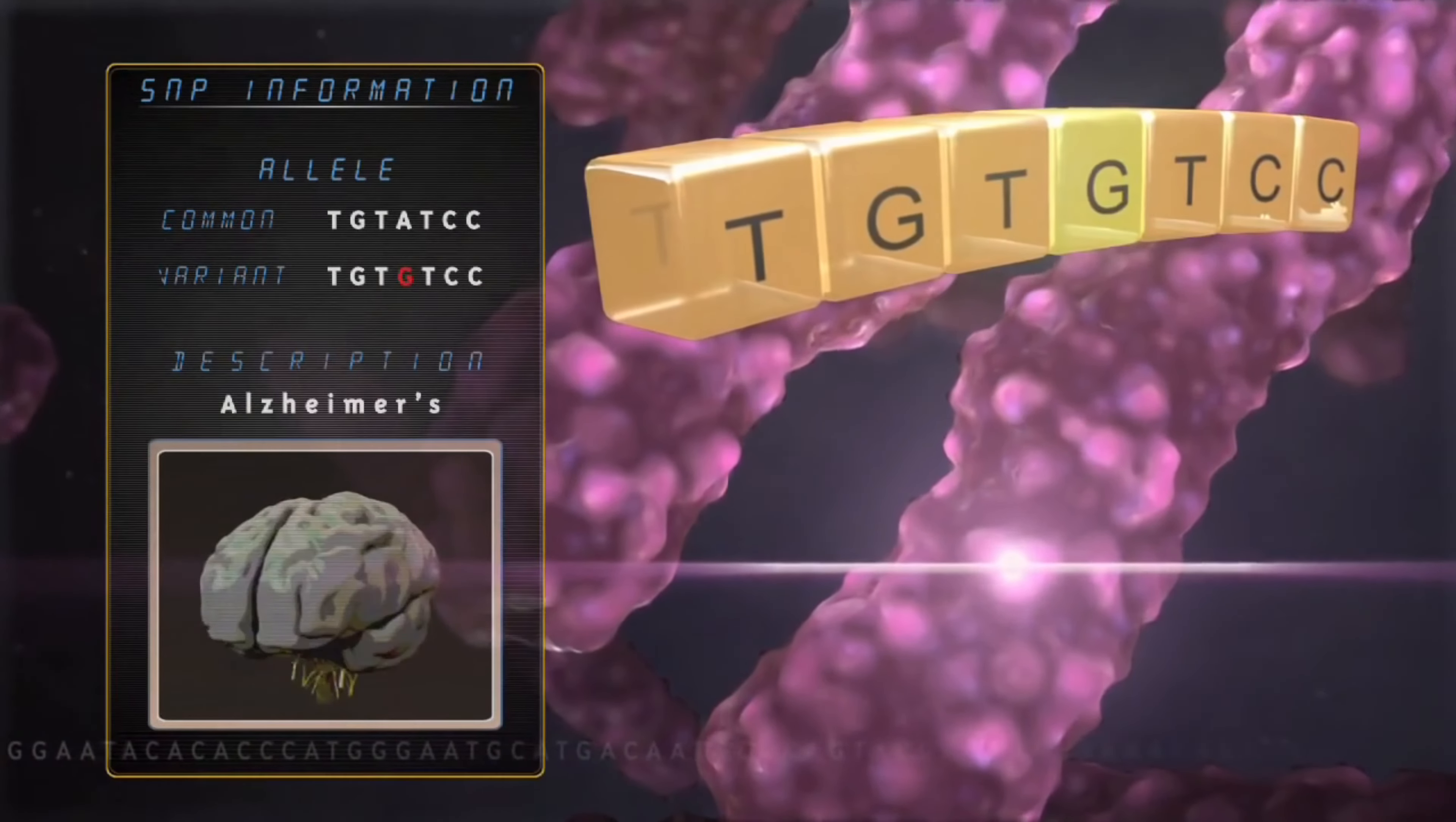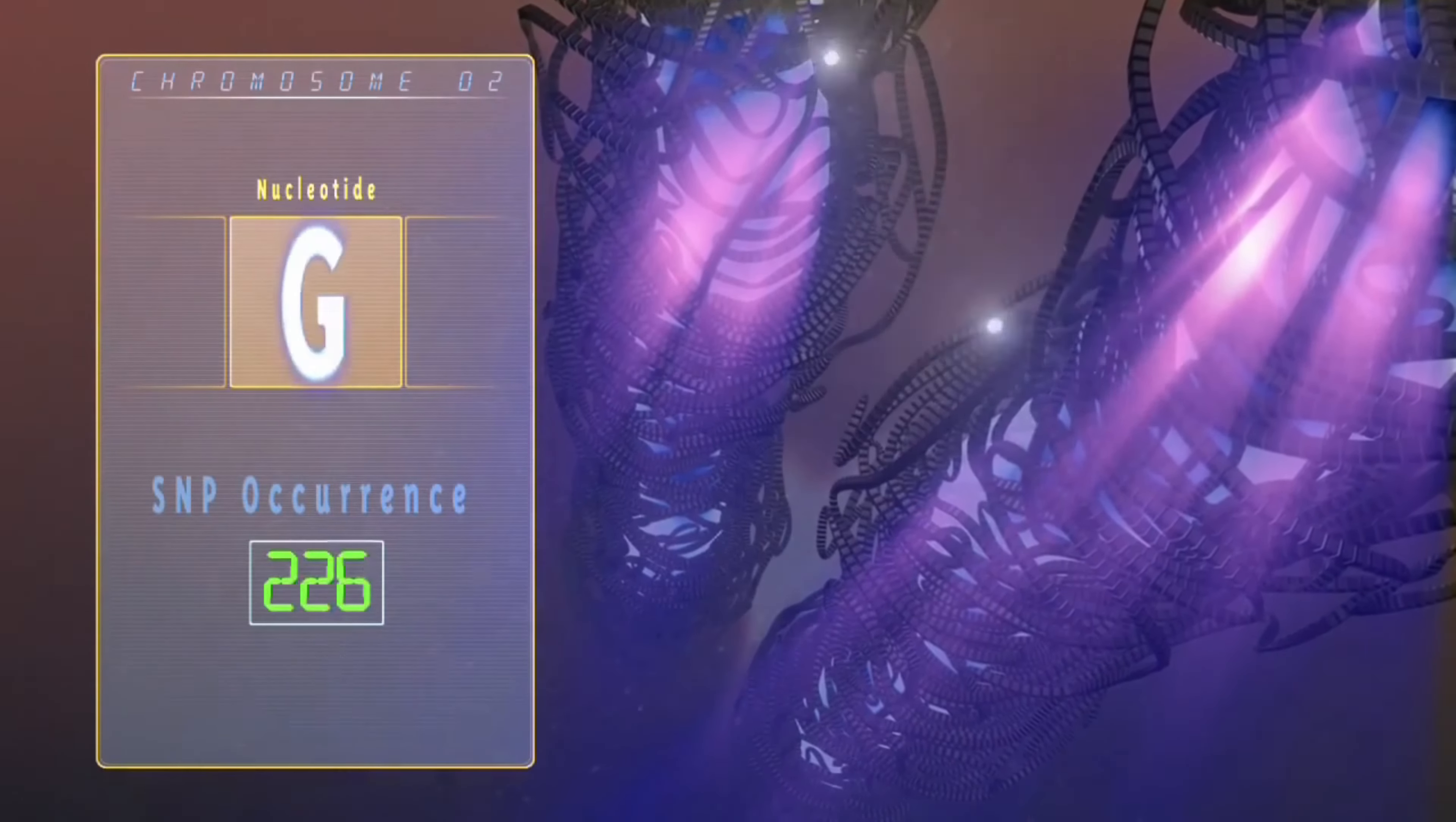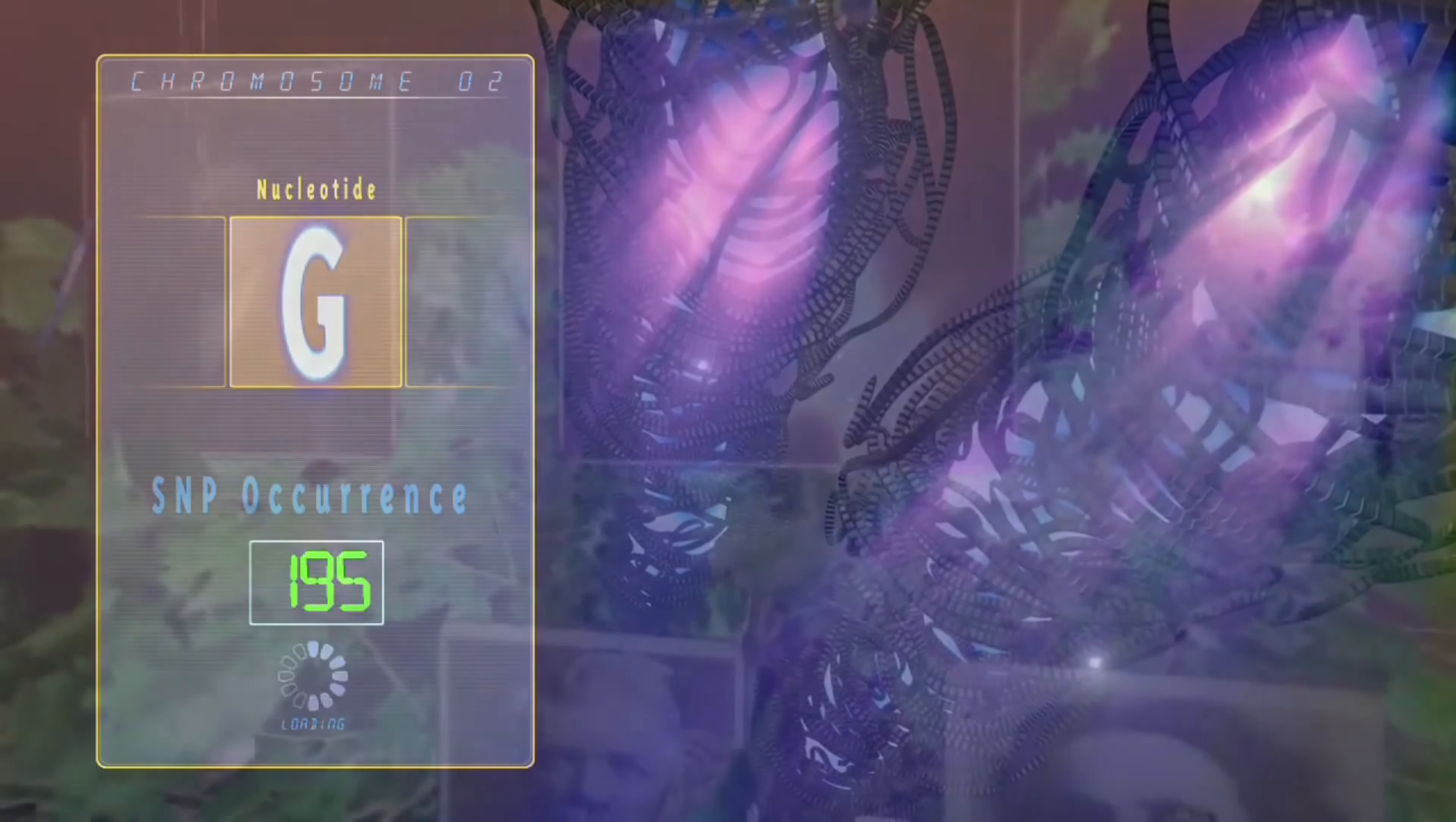Moreover, the cutoff of at least one percent prevalence for a variation to be classified as a polymorphism is somewhat arbitrary. If the frequency is lower than this, the allele is typically regarded as a mutation.